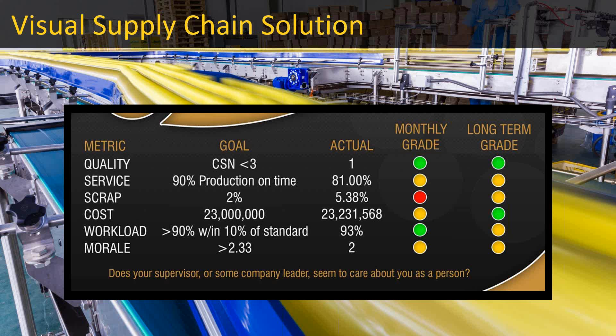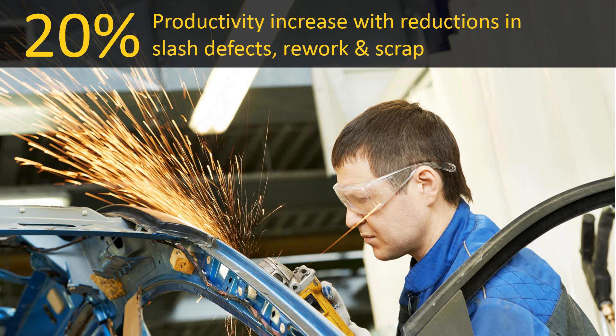Someone referred to this as a 360-degree scorecard — everyone in the plant knows how every area is functioning. The power of real-time for manufacturing really comes through here. The old saying about statistics is that they only tell you what happened in the past, but with real-time data collection capabilities you can affect production immediately as that data is being reported.